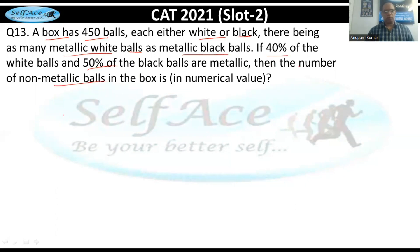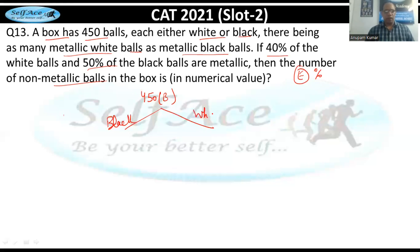This is an easy question from percentages. There are 450 balls in total — black and white — and each category is further divided into metallic and non-metallic. As per the question, the number of metallic white balls equals the number of metallic black balls.